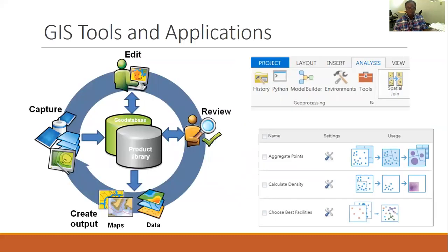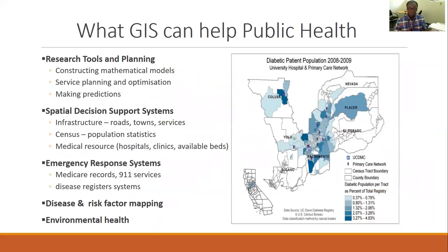The good news is that in public health, many of the data sets we deal with already have geographic information embedded in them. In addition to data, we also need tools and applications. There are several tools that have been built — for instance, tools for editing, tools for capturing data, tools for creating your map, tools for manipulating your data, and tools for analyzing data sets. Throughout the module, you will have the opportunity to learn some of these tools.